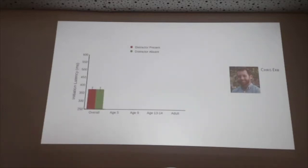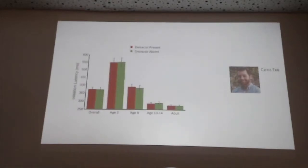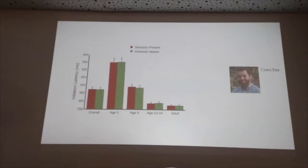If you break it down by age, there's a very clear main effect of age — five-year-olds take almost twice as long to start moving as adults in this task. But there's actually no effect of distractors. It's remarkably flat across all age groups: the presence of a distractor has no impact on how quickly people start moving.